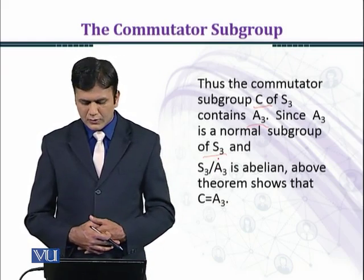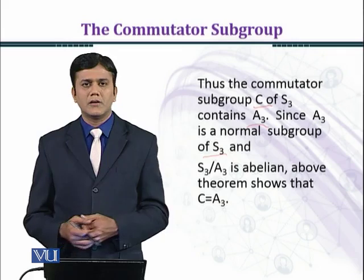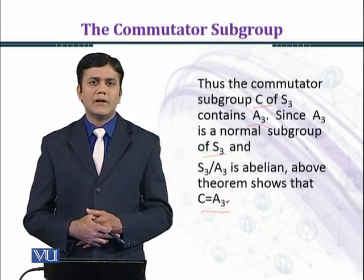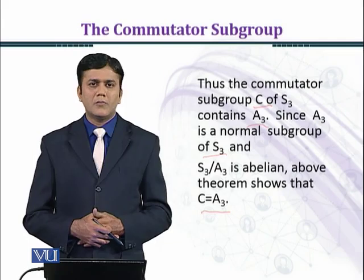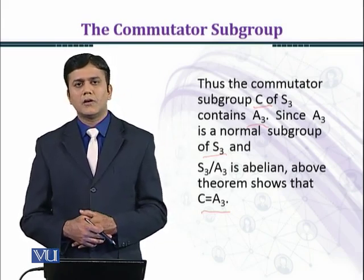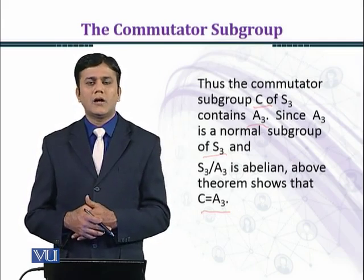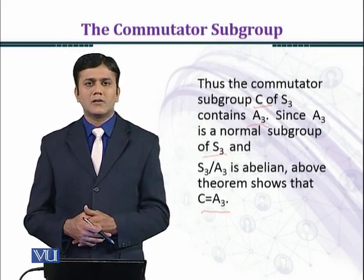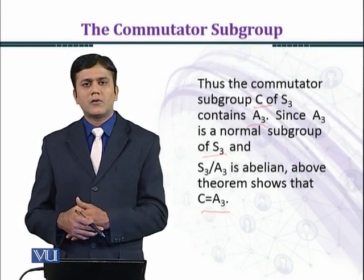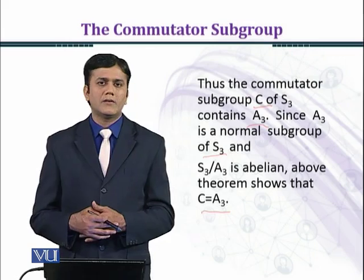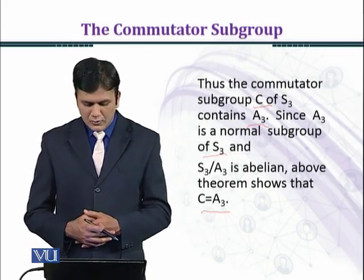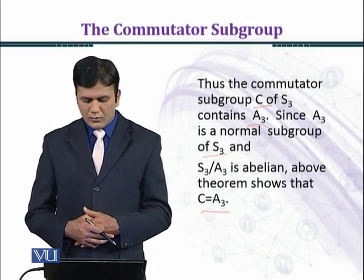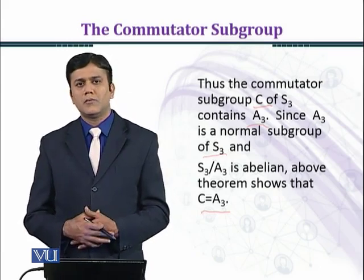Using this theorem, we conclude that C = A3. The commutators we computed include rho1, rho2, and the identity rho0, since the identity is always an element of the commutator subgroup. Therefore C = A3, the set of all even permutations of S3.